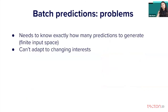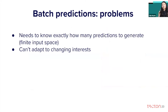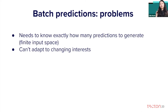There are a lot of problems with batch predictions. One is that you need to know exactly how many predictions you need to generate beforehand, meaning you need a finite input space. In the case of Netflix, they know exactly how many users there are and can pre-compute recommendations for those users. If a new user comes, you can just give them generic recommendations such as an average or the most popular movies.